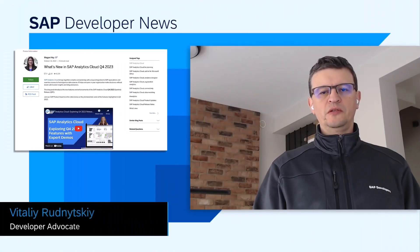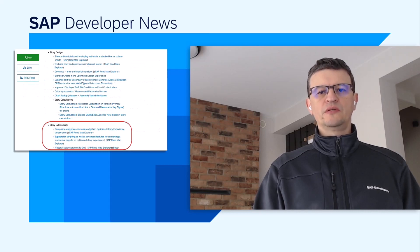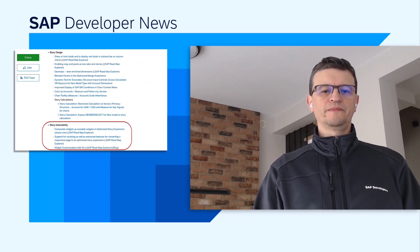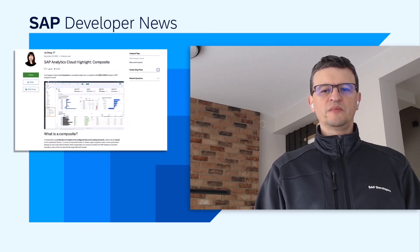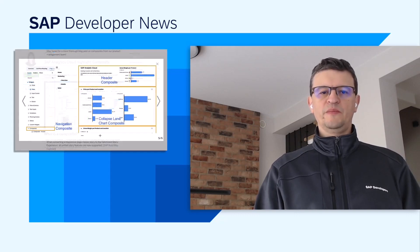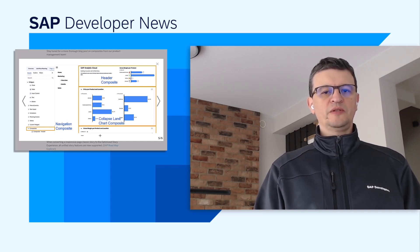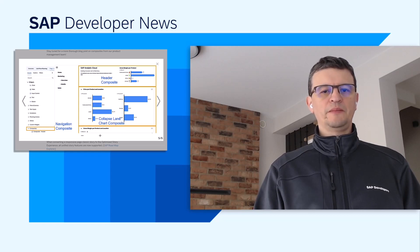Last weekend, the new quarterly version of SAP Analytics Cloud was released. The product management team did a great job publishing a post that highlights all the features of this new release. I would like to bring your attention to what's new in story extensibility. Story developers can now create a composite widget, which is a reusable building block that can be consumed like any other standard widget in stories. Composites are stored in the file repository as an artifact, allowing you to transport it to another tenant. The use of composites will help speed up development time.